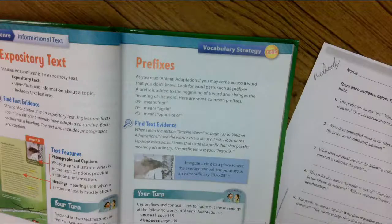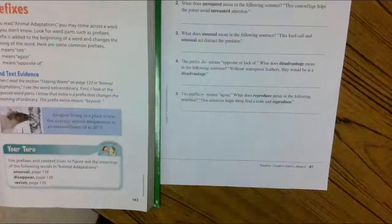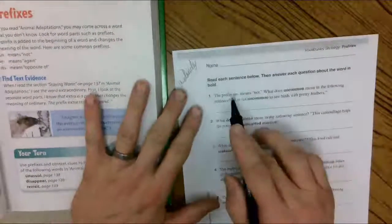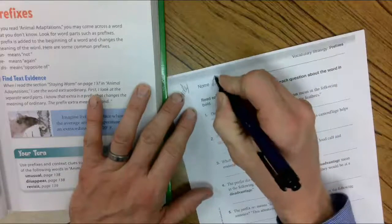Alright class, if you didn't choose to do the Animal Adaptation Worksheet, your assignment for today is page 87. It says read each sentence below, then answer each question about the words in bold.